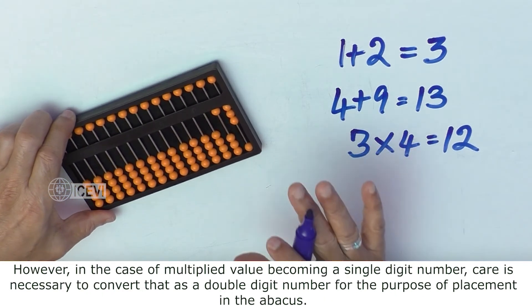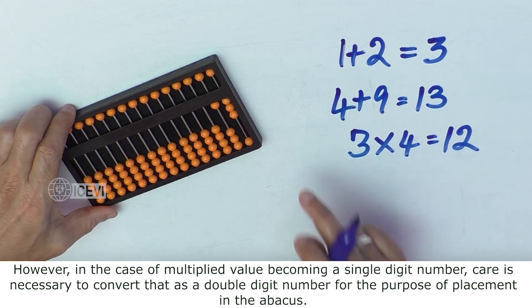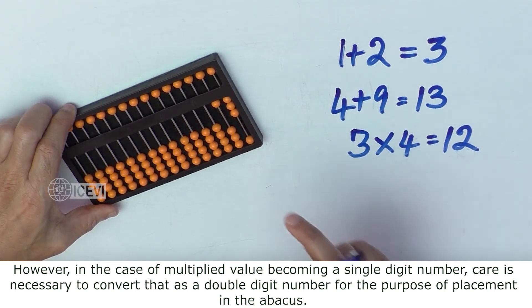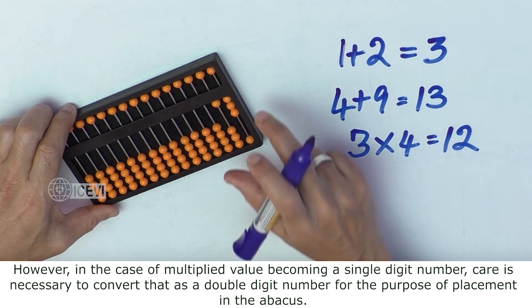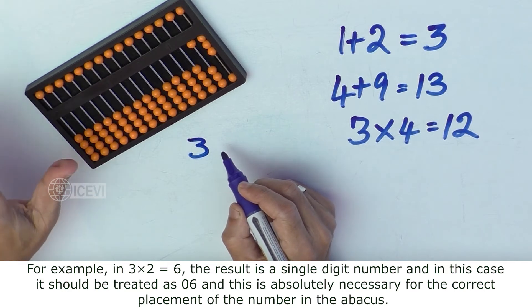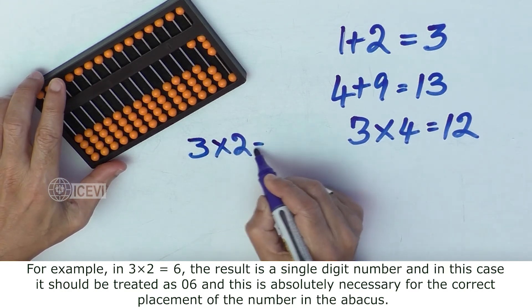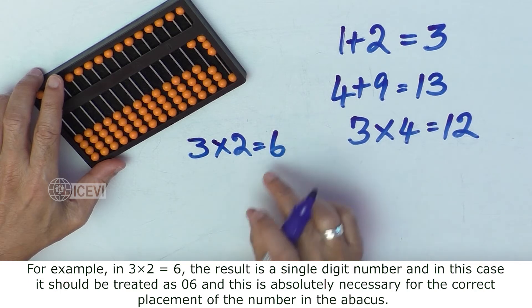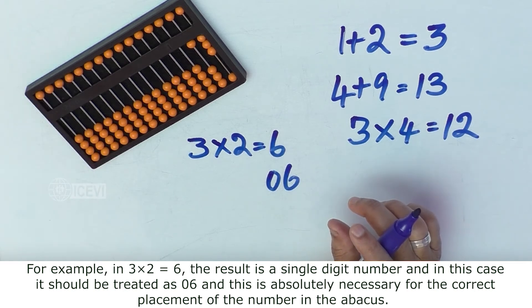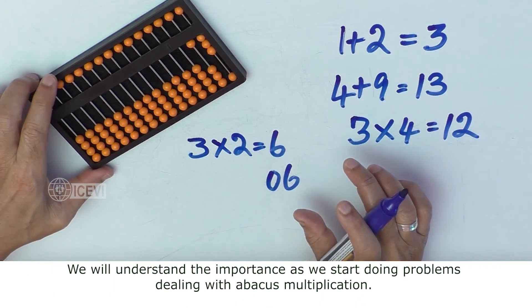in the case of multiplied value becoming a single digit number, care is necessary to convert that as a double digit number for the purpose of placement in the Abacus. For example, 3 multiplied by 2, that is 6, the result is a single digit number and in this case it should be treated as 06 and this is absolutely necessary for the correct placement of the number in the Abacus.